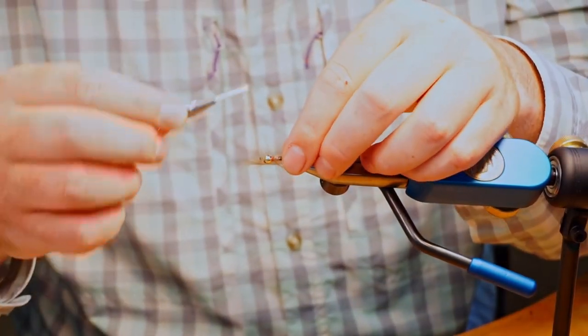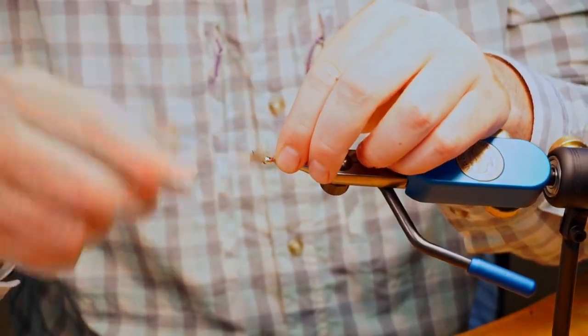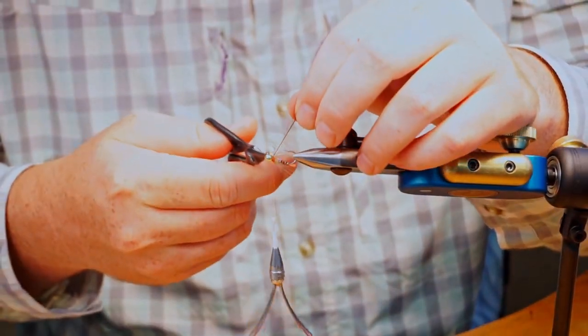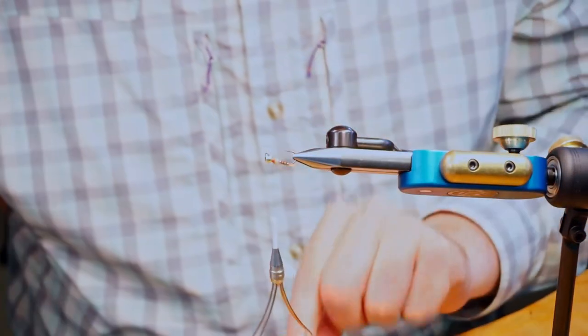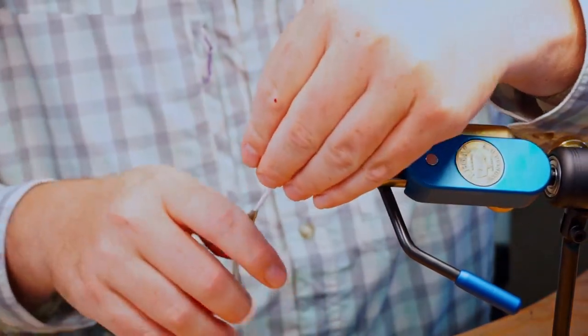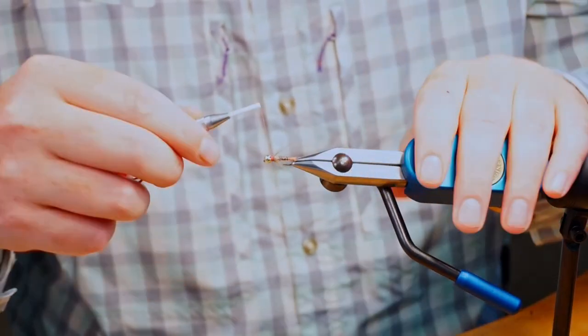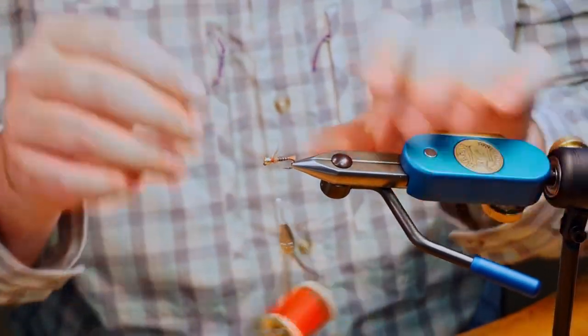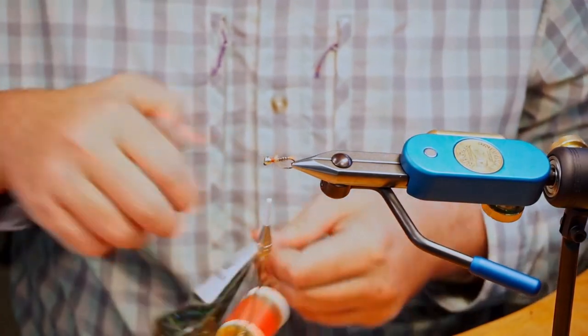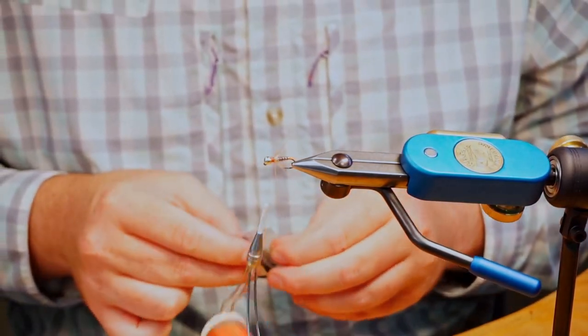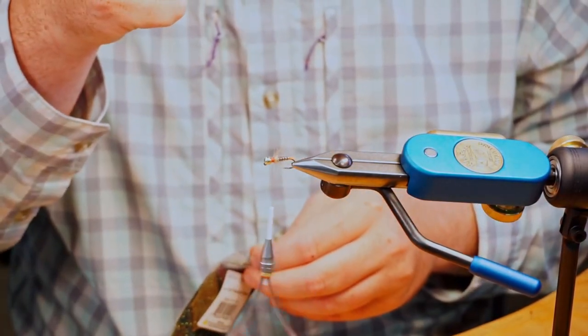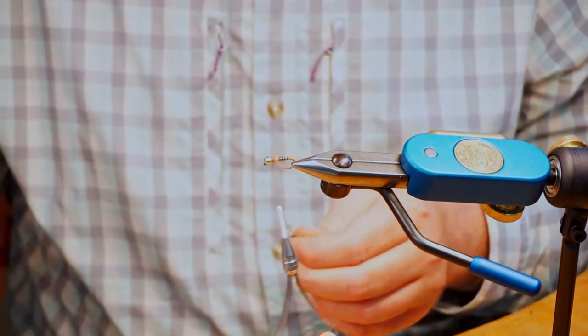And as the fish eat this fly here, which I guarantee you they will, that UV tan ice dub back behind the CDC will kind of get plucked by their teeth and just make that thing look really nice. And the word you were going to use is buggy. Si senor. Nice.